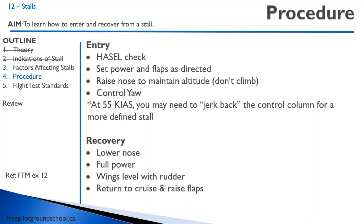Let's discuss the procedure for entry and recovery in a stall. When we're practicing a stall, we're going to begin with the HASEL check — Height, Area, Security, Engine, and Lookout. Just have a good lookout around you. You're going to set the power and flaps as directed by your instructor, or if flying solo, as you choose. You're going to raise the nose to maintain altitude — we don't want to climb unless it's a full power stall. This is really important: you want to control yaw using your rudder only, never your ailerons — only your rudder to keep the airplane straight and wings level.